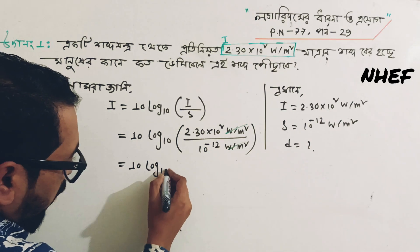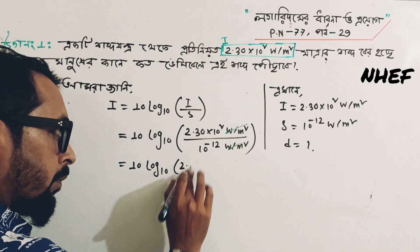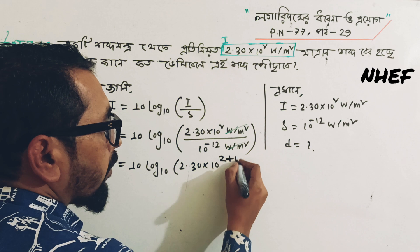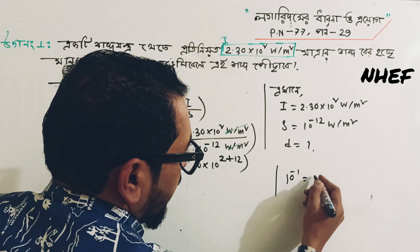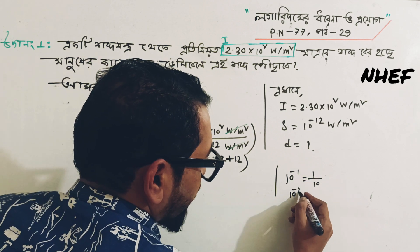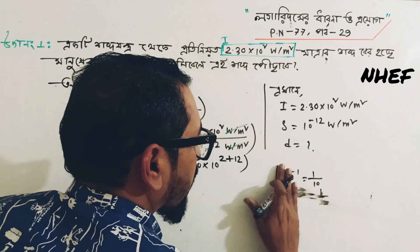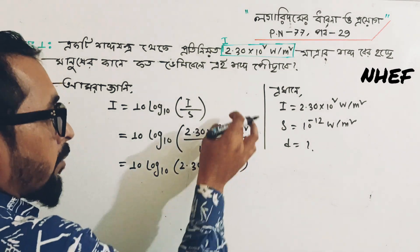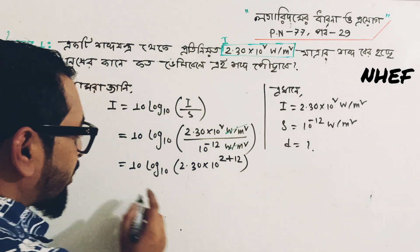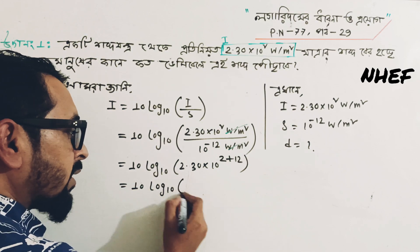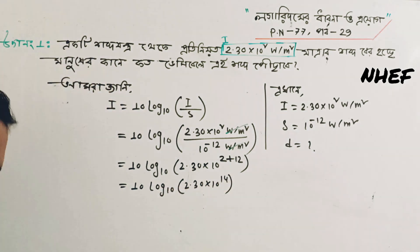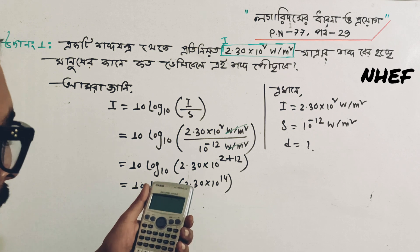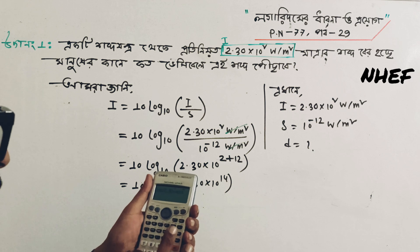10 log base 10 of 2.30 — that is 10 to the power 2 plus 12, which is 10 to the power 14. So we have to write 10 log base 10 of 2.30 × 10 to the power 14. That means log of 2.30 times 10 to the power 14, bracket close. That gives us 14 plus log 2.30.